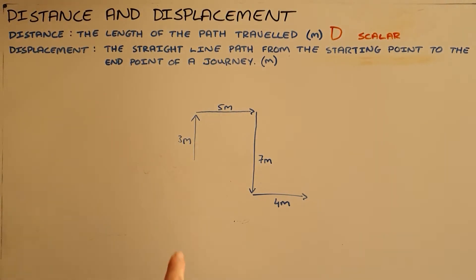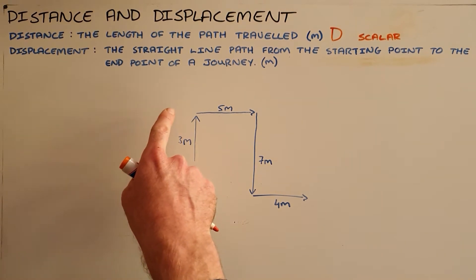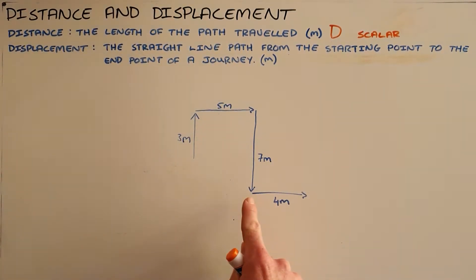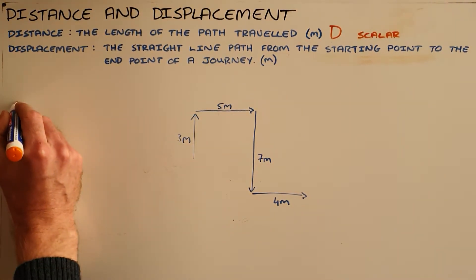If we consider an object that travels a path where it moves three meters upwards, then five meters to the right, then seven meters downwards, and then four meters to the right, we can say that the distance traveled by this object is the total length of that path traveled.